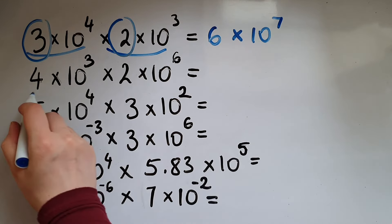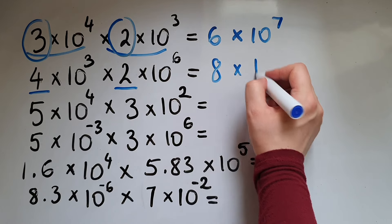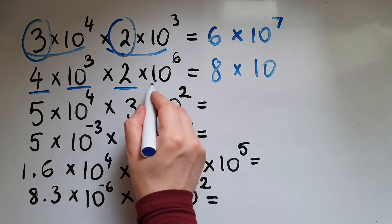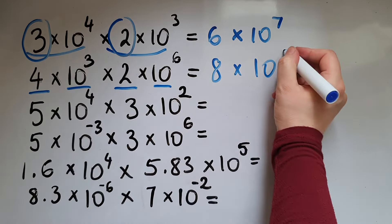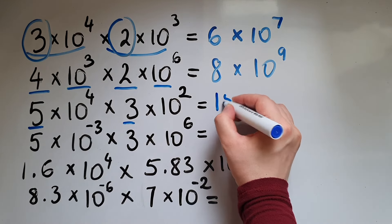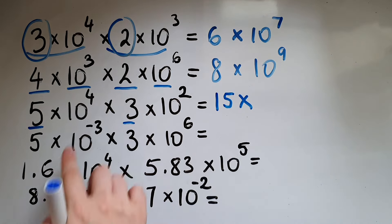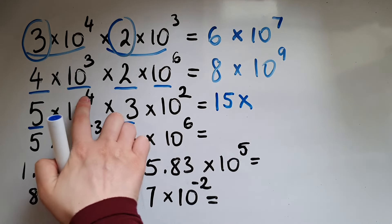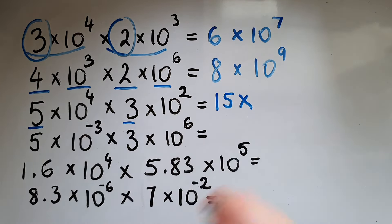We'll repeat the process. 4 times 2 is 8, times 10 to the power of 3 and 6 is 9. Then 5 times 3 is 15, times 10 to the power of 4 and 2 is 6.